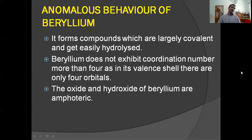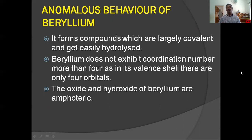Anomalous behavior of beryllium: due to small size, high ionization enthalpy, high electronegativity and absence of d orbitals, beryllium shows some anomalous properties and differs from other alkaline earth metals. It forms compounds which are largely covalent and get easily hydrolyzed. Beryllium does not exhibit coordination number more than 4, as in its valence shell there are only 4 orbitals and it has no d orbitals, so it cannot show a valency more than 4.